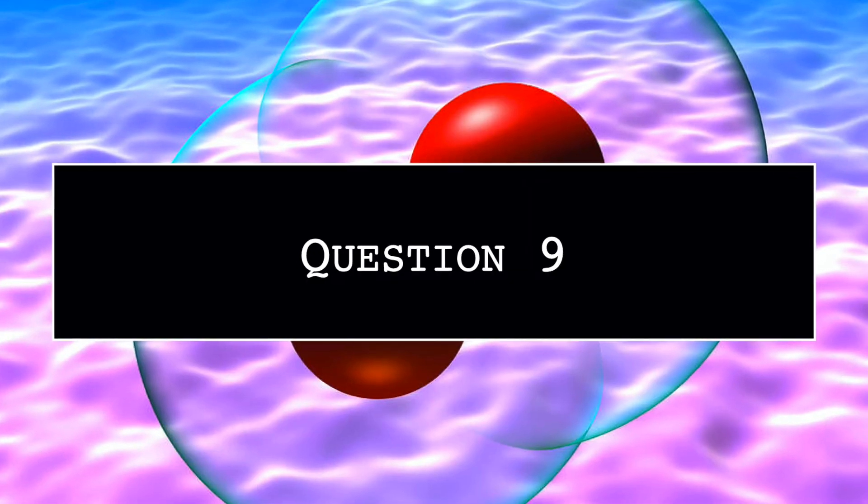Question 8: Water is made of two oxygen atoms and one atom of what? Question 9: Oxygen is a waste product of photosynthesis. Photosynthesis is part of the life cycle of what — animals, plants, or fungus?